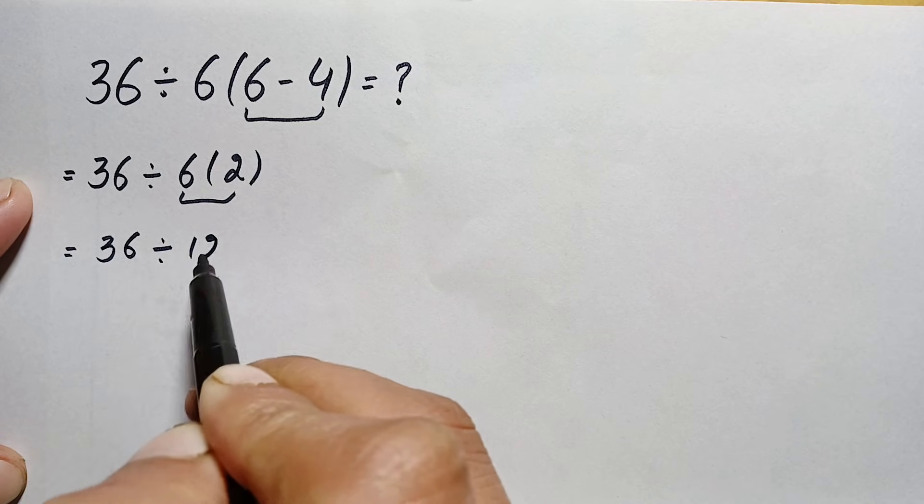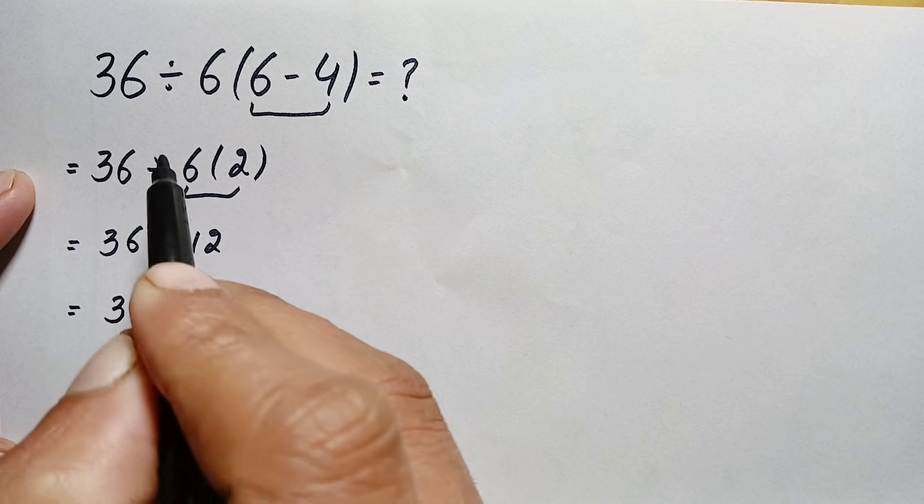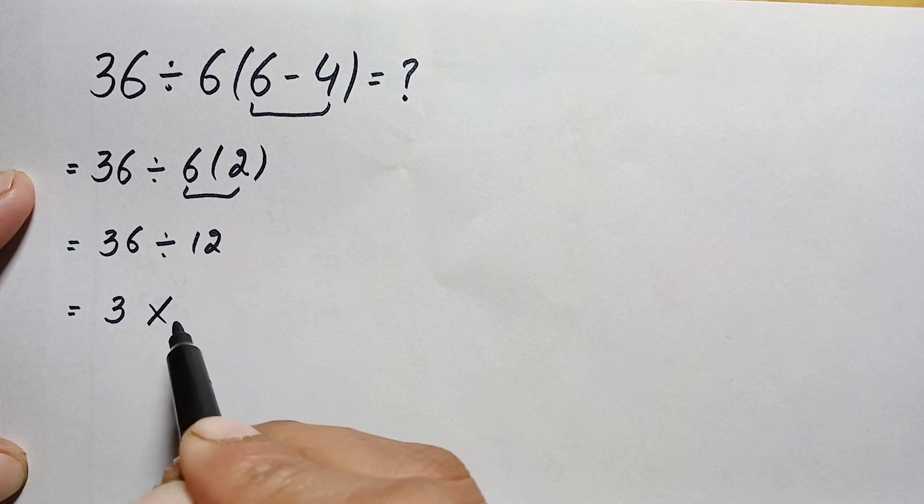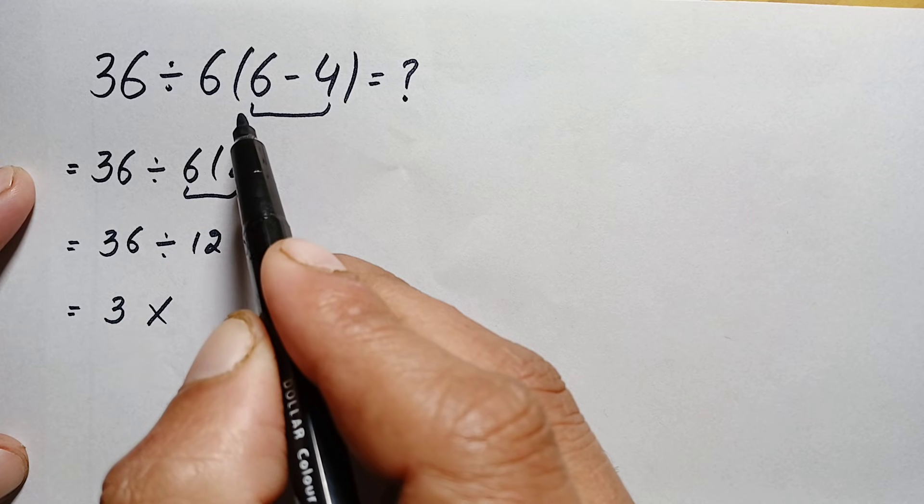...divided by 12, and 36 divided by 12 is simply 3. Now is 3 the correct answer? No, 3 is not the correct answer. To solve this problem correctly and properly, we have to keep in mind the PEMDAS rule.